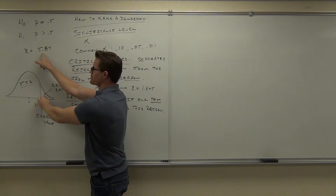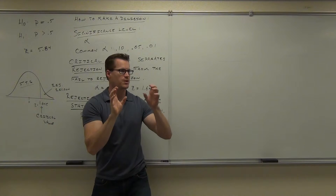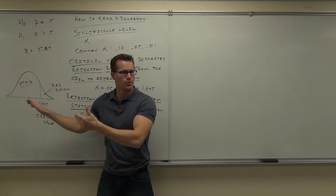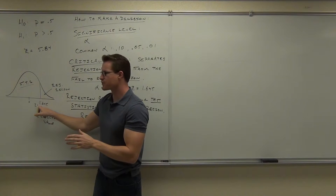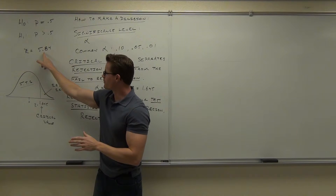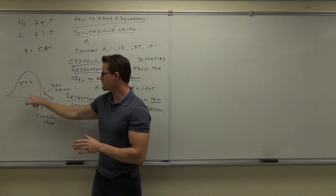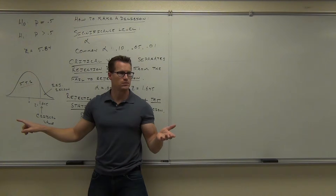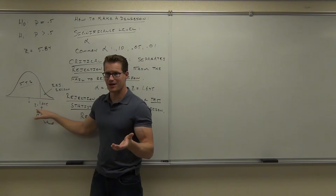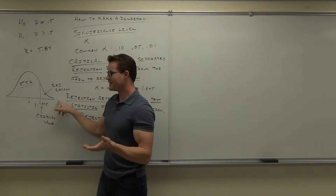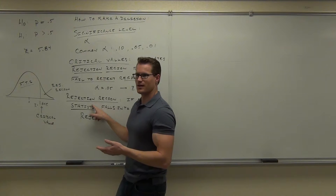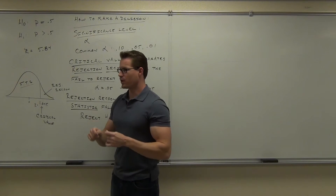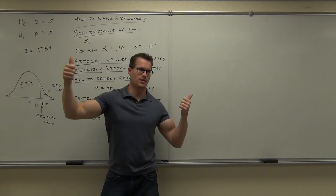Your test statistic — that number that you created based on your comparison between your sample's data and your population hypothesis — gives you that number. It's called a test statistic because it's what you're testing against your critical value. So you compare these two numbers. You compare the 1.645 and you compare the 5.84. You look where the 5.84 is in relation to the 1.645. Does it fall in the fail-to-reject region or the rejection region? It's a number line. Where's 5? It's way over there — definitely rejection region. That tells you you are going to reject your null hypothesis. That's how you make a decision.